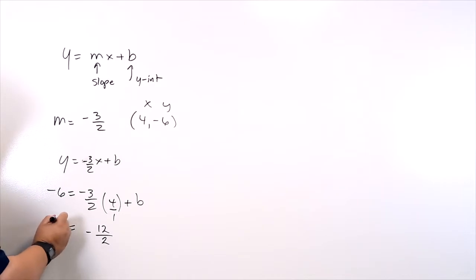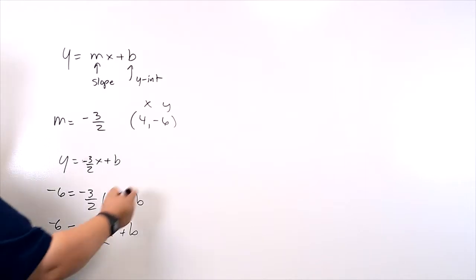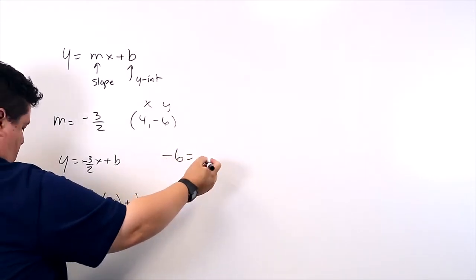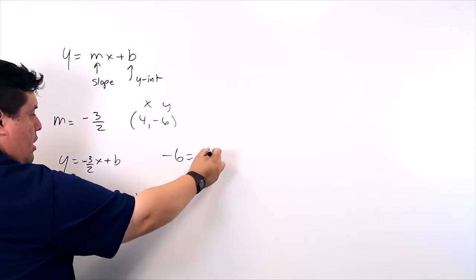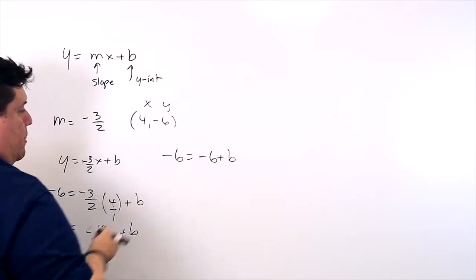There's an equal sign. There's a negative 6 over here. There's a plus b. 2 goes into 12 how many times? 6. Don't forget the negative. So we got negative 6 equals another negative 6 plus b.